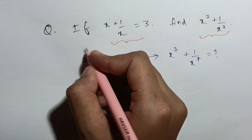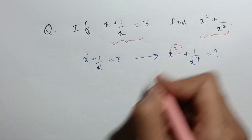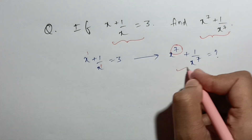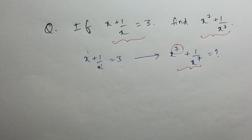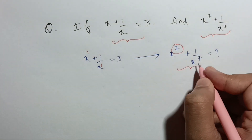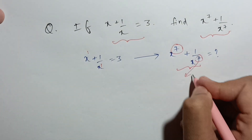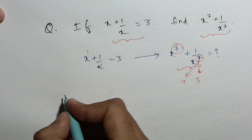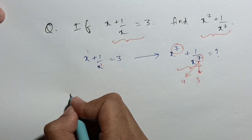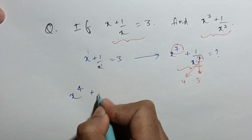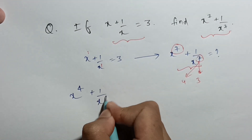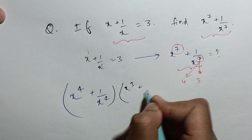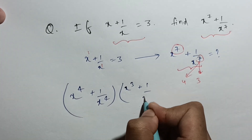We have x plus 1 by x equal to 3 and we have to find x raised power 7 plus 1 upon x raised power 7. There is no direct formula for the 7th power, so what I can do is split 7 into two parts: 4 and 3. I will write the expression x raised power 4 plus 1 upon x raised power 4, multiplied by x cube plus 1 by x cube.